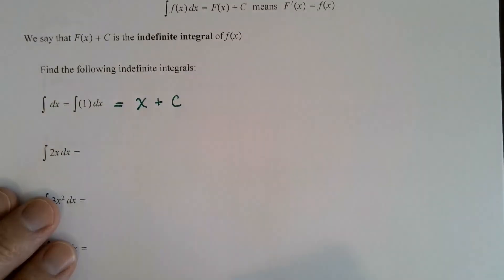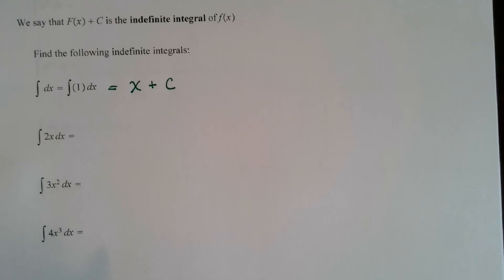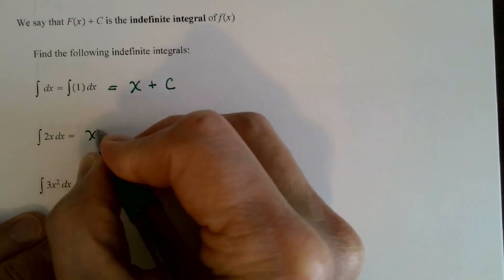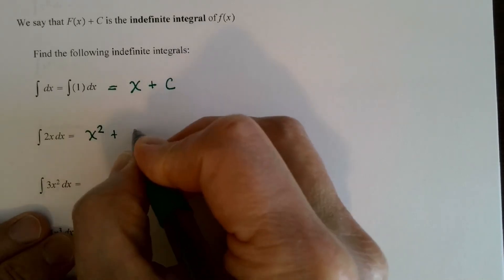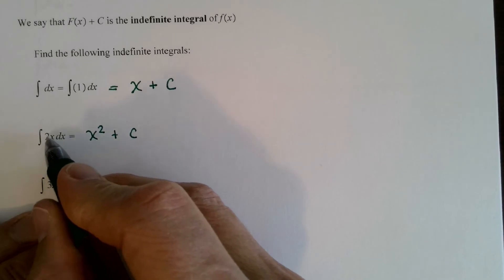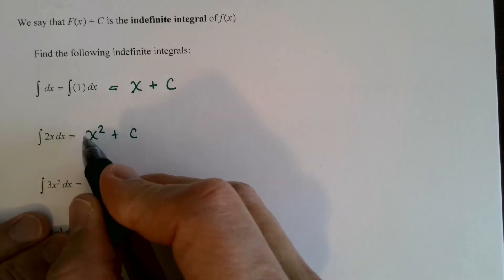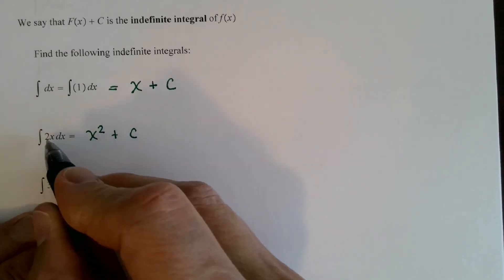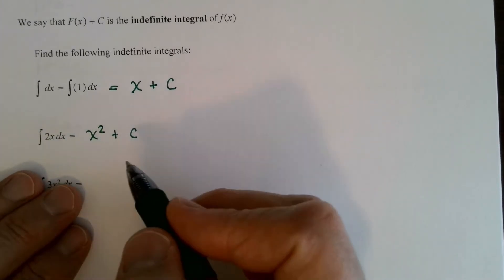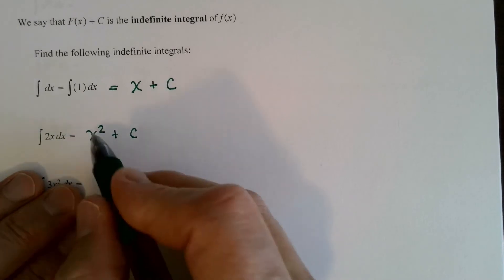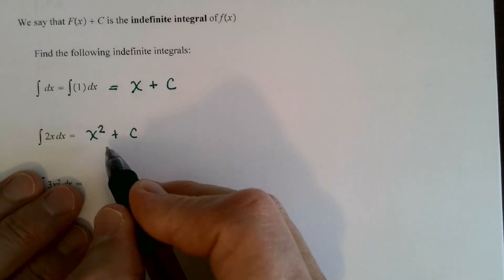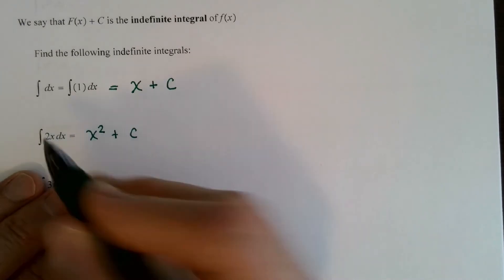What's the anti-derivative of 2x? It's x squared plus a constant. We're undoing the power rule here — we're bringing the 2 back up. The power rule says bring the 2 down, subtract 1, and you get 2x — the derivative of x squared is 2x. If you know how to find derivatives, you can check: take the derivative of your answer and it should give you what you started with.